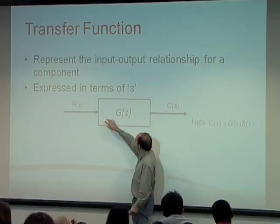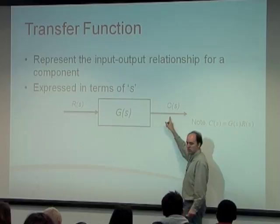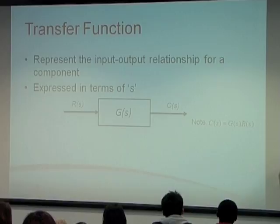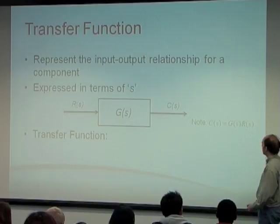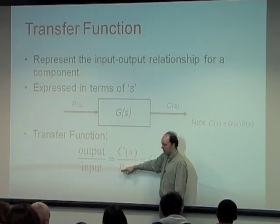The transfer function: any input R coming in, you multiply it by G(S), and you get C(S) as output. So C(S) = G(S) × R(S). R(S) is your input, G(S) is the transfer function, and C(S) is your output. Dividing both sides by the input R(S), the transfer function G(S) is the output divided by the input — output over input. Don't get that mixed up: output over input.